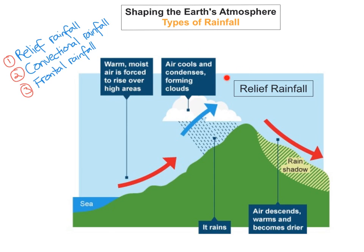So the first one we're going to look at is called relief rainfall. How does relief rainfall happen? Well, what happens is you have warm air, and when the warm air is traveling along, it meets maybe a mountain or quite a high-facing slope. The warm air has no choice but to rise up. As it rises, it cools, condenses, and forms water droplets. These water droplets collate together to form a cloud, and then you will get some precipitation. Precipitation will happen usually on the windward side of the mountain, and you'll get some rain shadow on the far side.